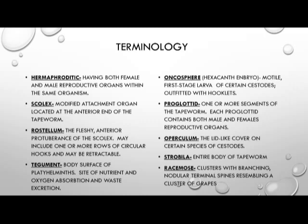A proglottid is one or more segments of the tapeworm, and each proglottid contains both male and female reproductive organs. The operculum is a lid-like cover on the shell of certain species of cestodes, used to evacuate the hexacanth embryo. The strobila is the entire body surface of the tapeworm, and racemose refers to clusters of branching nodular terminal spines that resemble a cluster of grapes.